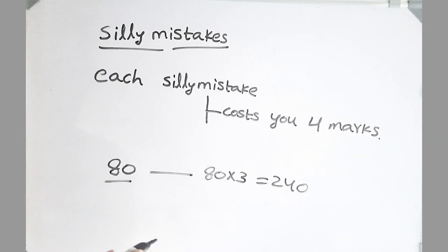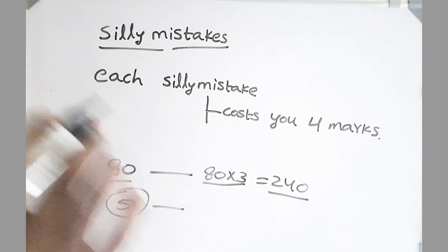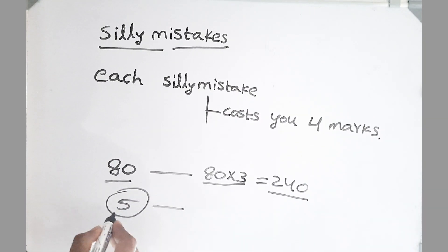Friends, let's take a case if you have attempted 80 questions and you think almost all of them are correct. You would be expecting a score of 240. But 5 silly mistakes - 5 is the bare minimum silly mistakes committed by everyone. This is average. Many people commit even more silly mistakes.